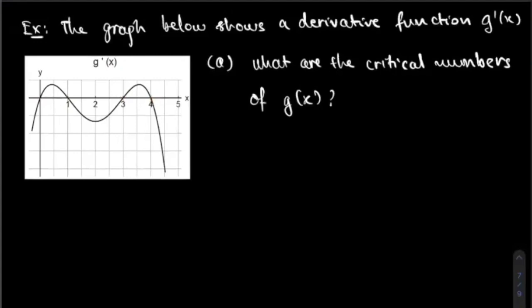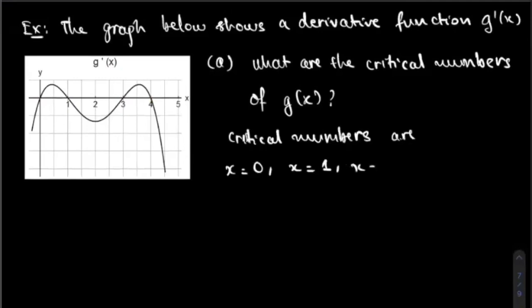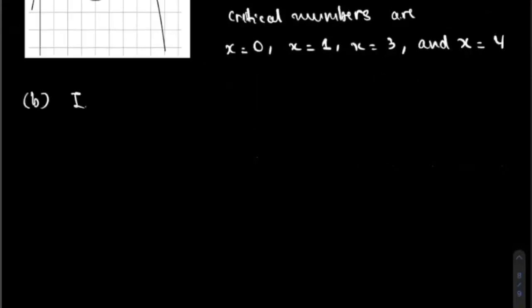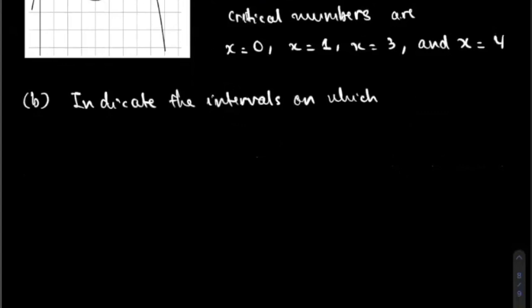So the critical numbers are X equal to zero, X equal to one, X equal to three, and X equal to four. Part B indicates the intervals on which the original function G is increasing.